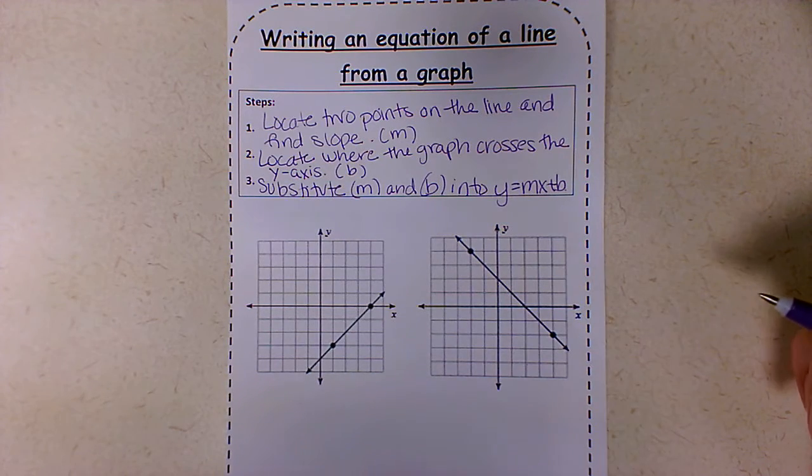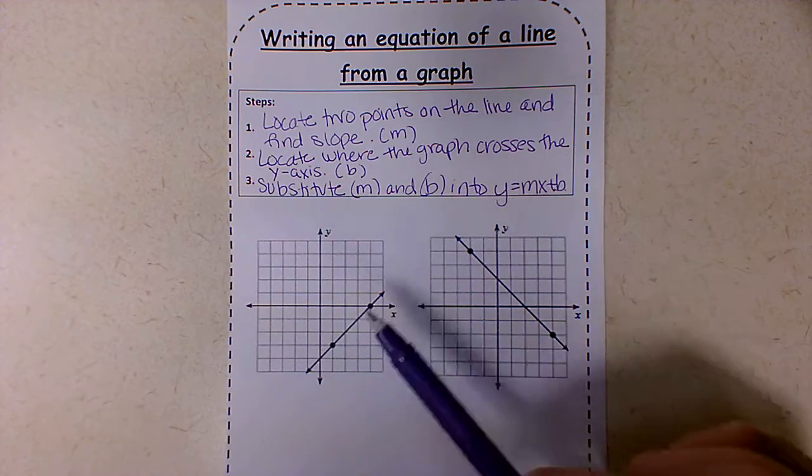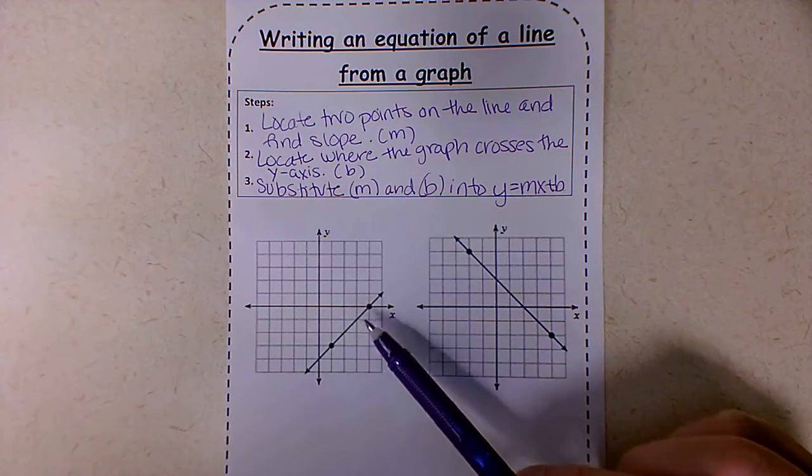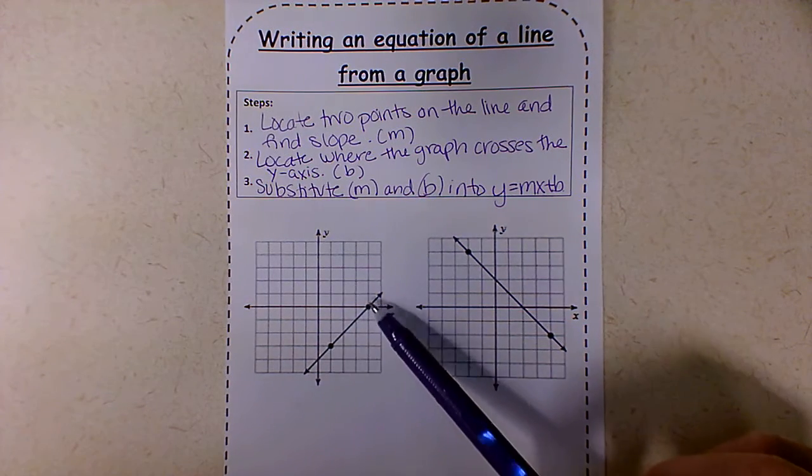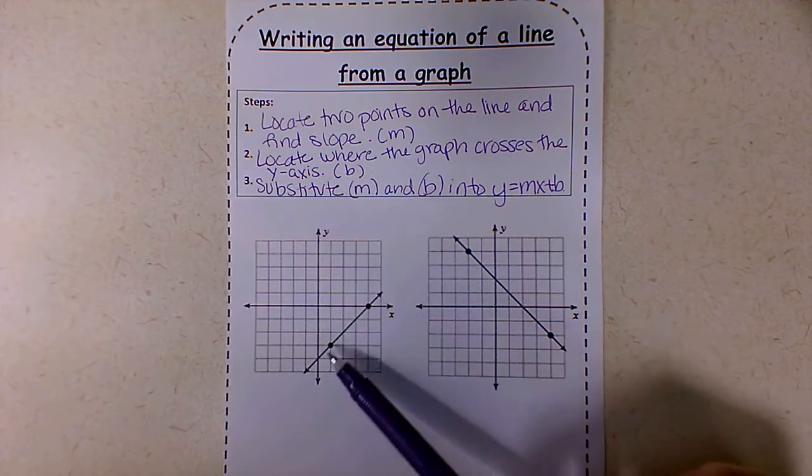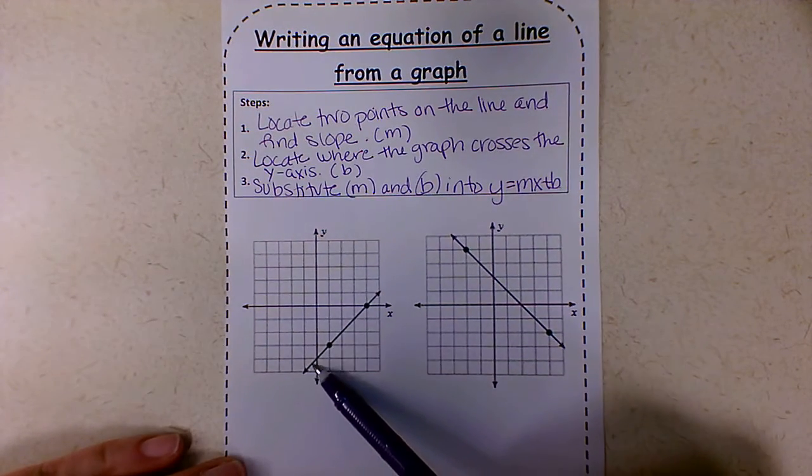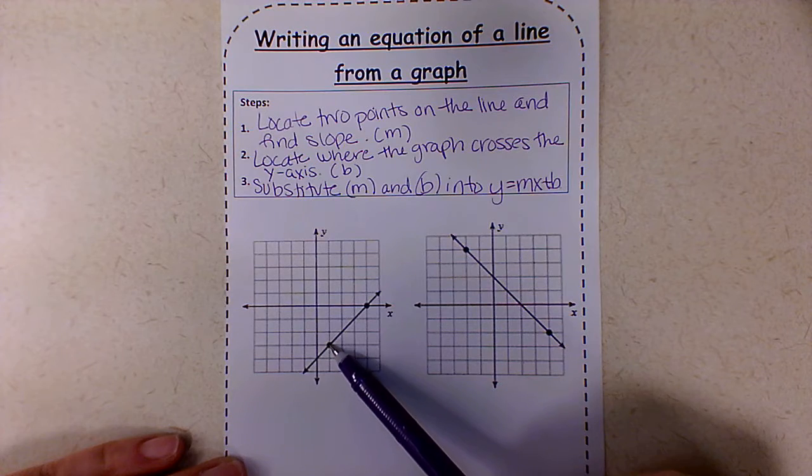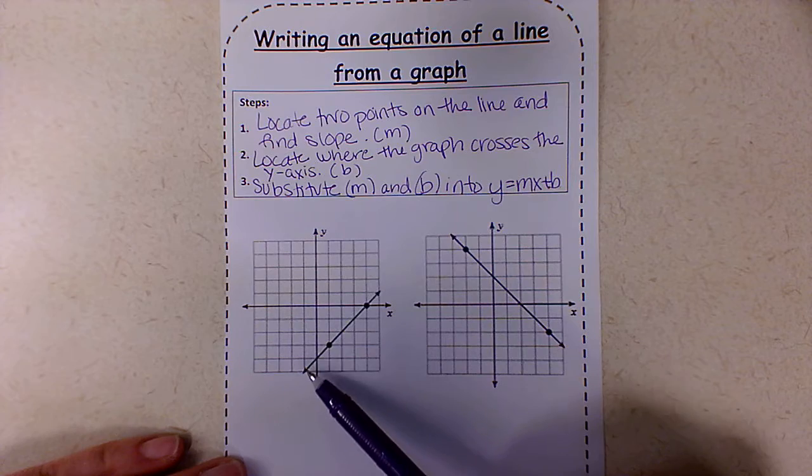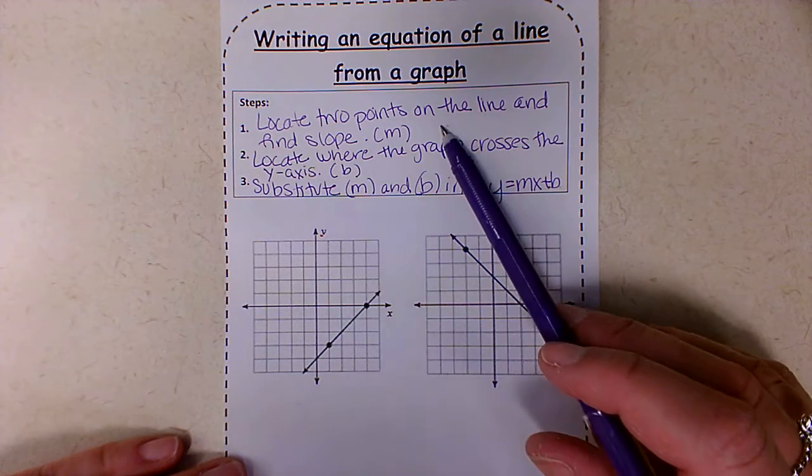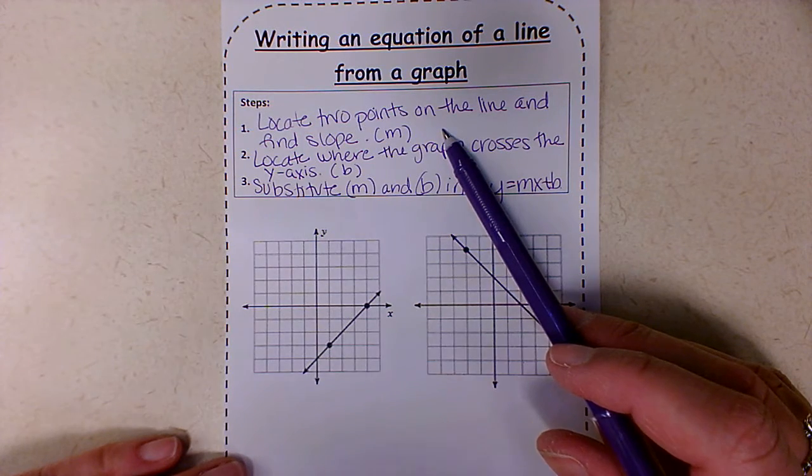Okay, let's go. So we have two graphs here, two different lines that we're going to be making equations for. I'm going to look at this graph first. Notice here is the line, and we have some points on the line already. Now, if you don't have points on the line, I want you to recognize where this line will cross, like the corner of these boxes. That's where I want you to try to find points, and that goes to our step one. We need to locate two points on the line and find slope.